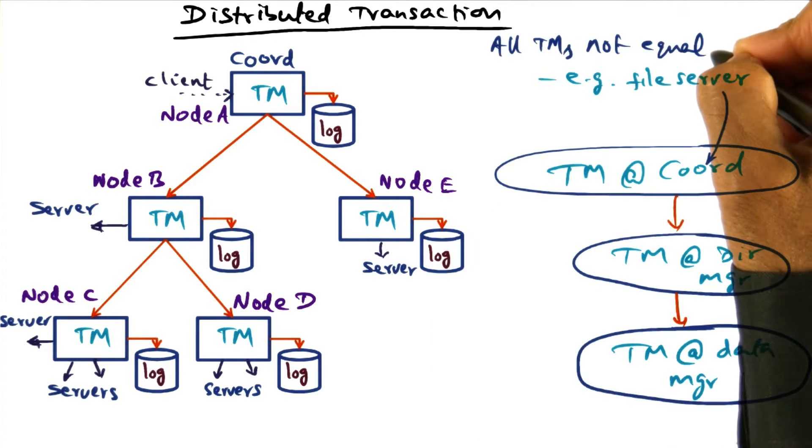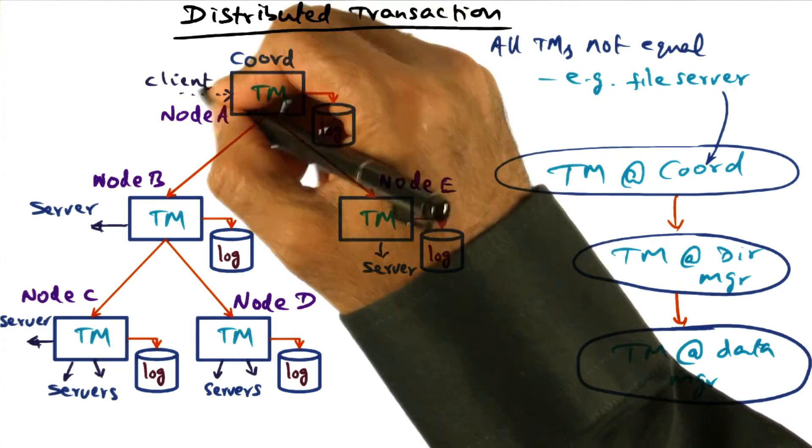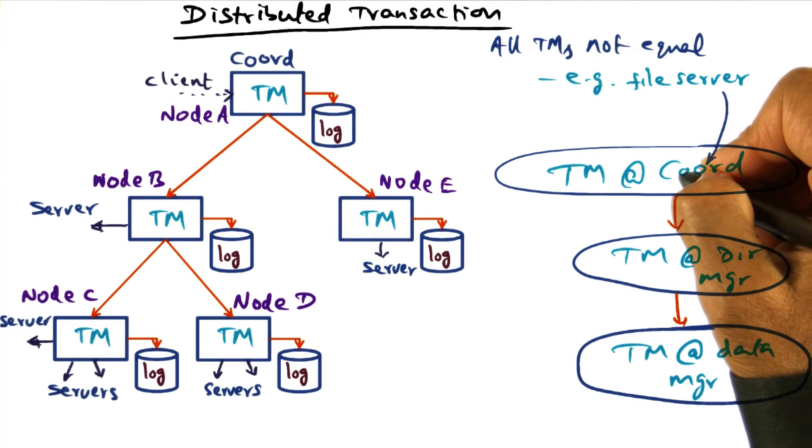All transaction managers are not equal. I mentioned earlier that brittle nodes in the system are the client nodes. And therefore, it is possible that a transaction manager that originated at a client node may designate the coordinator to be a more robust node like the file server.